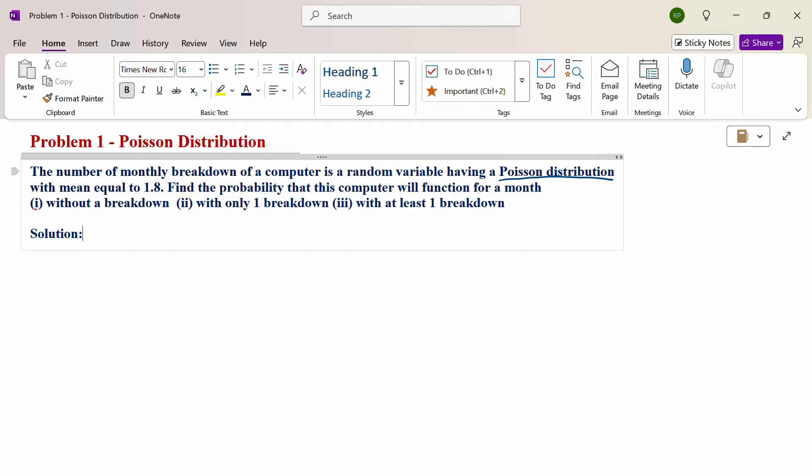Look at this problem. The number of monthly breakdowns of a computer is a random variable having a Poisson distribution with mean equal to 1.8. Find the probability that this computer will function for a month: first question without a breakdown, second one with only one breakdown, third one with at least one breakdown.